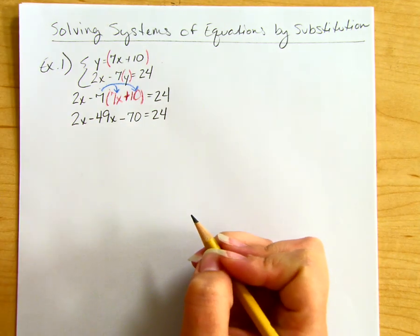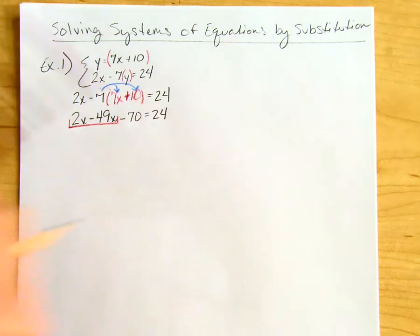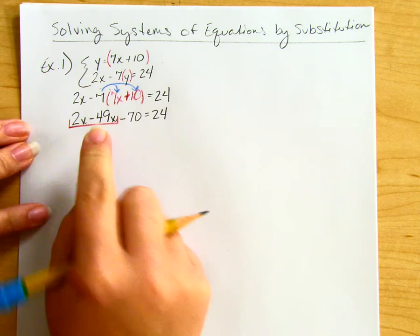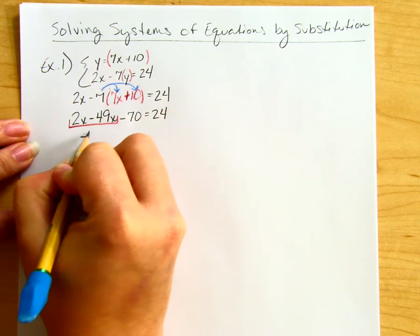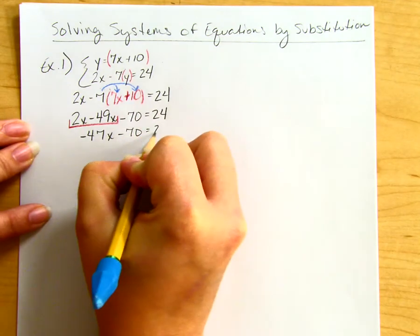On the left-hand side I can combine like terms. I have 2x and -49x, which becomes -47x - 70 = 24.